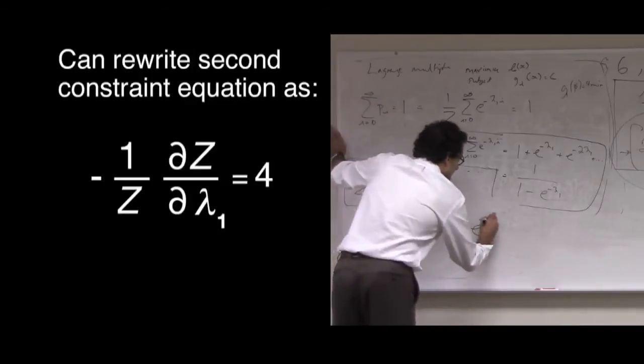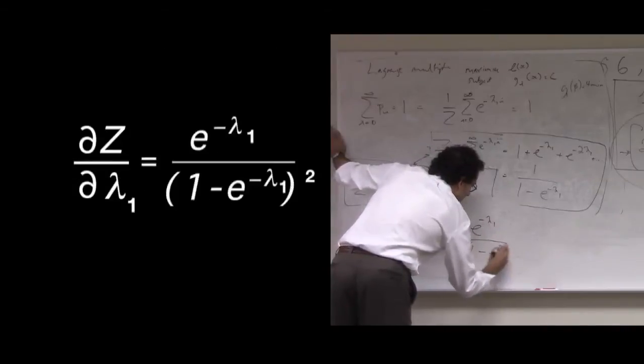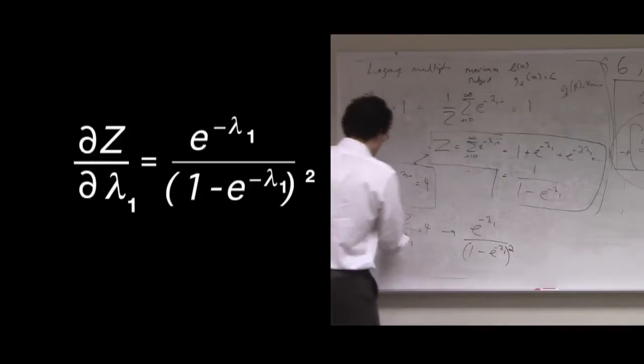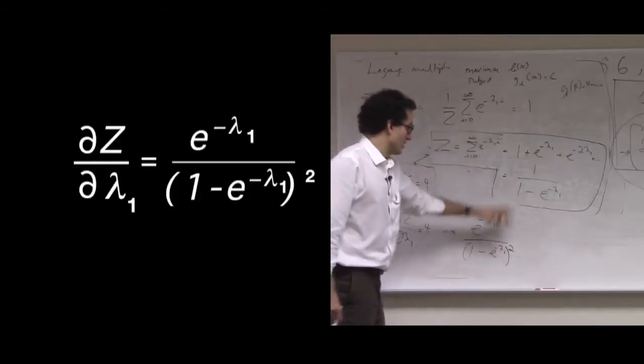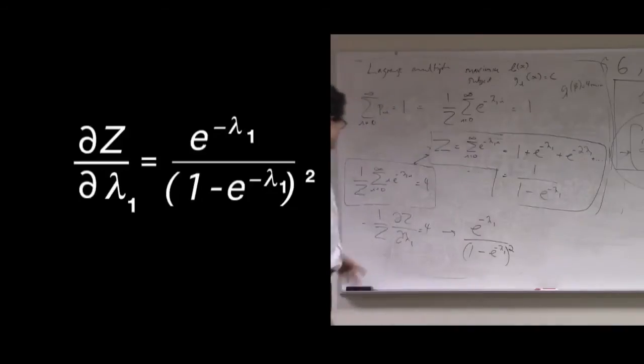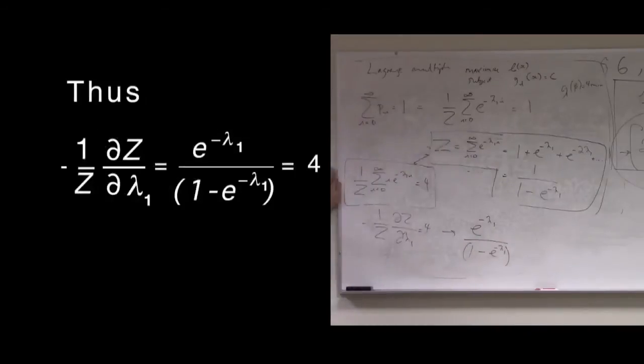We have a factor of e to the negative lambda 1 on top, 1 minus e to the negative lambda 1 squared, that's the derivative of z with respect to lambda 1, minus sign. And then we have a factor of 1 over z, and all that does is pull one of these out. So z is 1 over 1 minus e to the negative lambda 1. So if we divide by that, we just lose one of these.